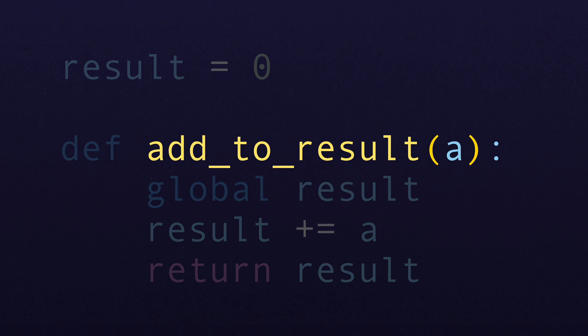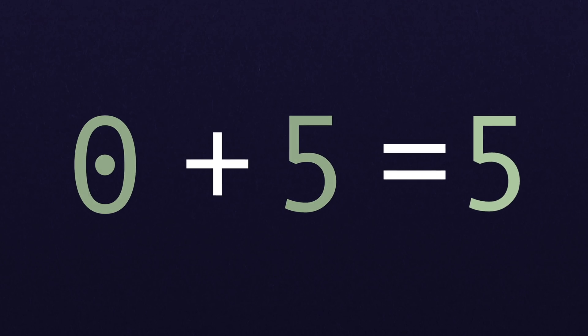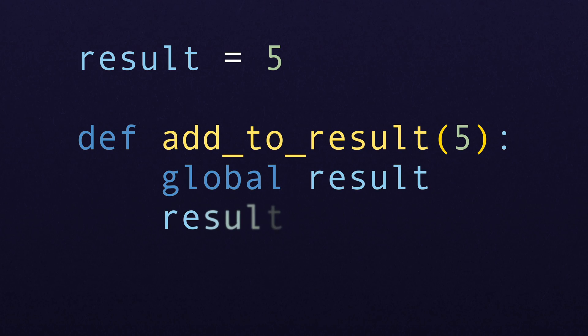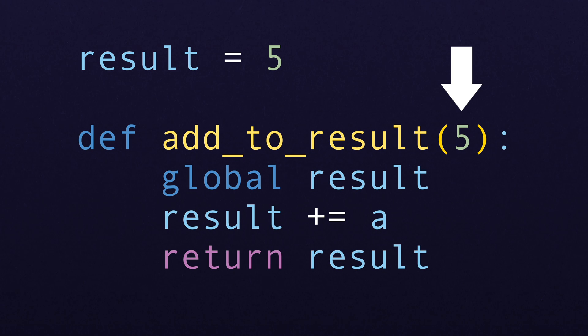The interesting thing about this function is that every time you call it, even with different inputs, you could potentially get a different result. For example, the first time I call addToResult with the number five, I expect to get back five because we're going to add zero to five and return it. But if I call addToResult again with the input five, I won't get five — and that's what makes it impure.